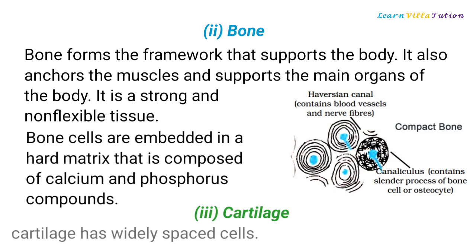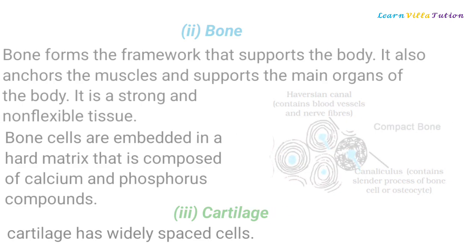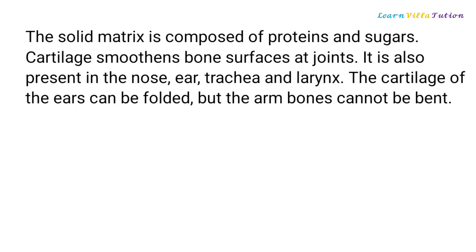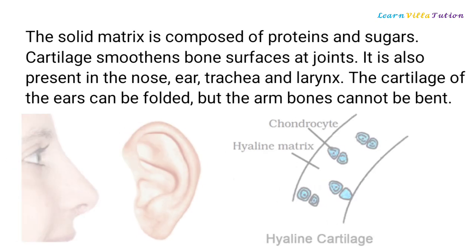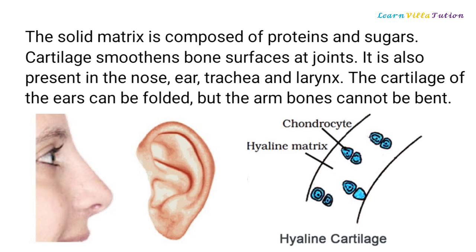Cartilage has widely spaced cells. The solid matrix is composed of proteins and sugars. Cartilage smoothens bone surfaces at joints, and is also present in the nose, ear, trachea and larynx. The cartilage of the ears can be folded, but the arm bones cannot be bent.